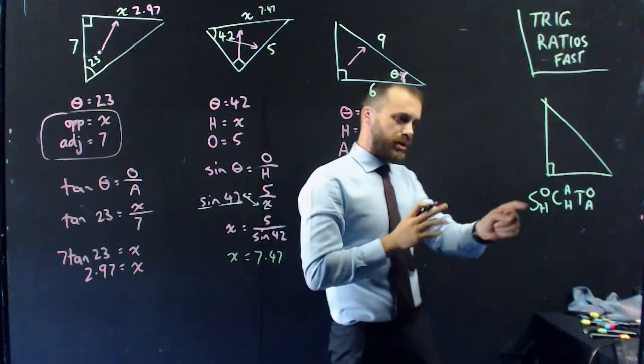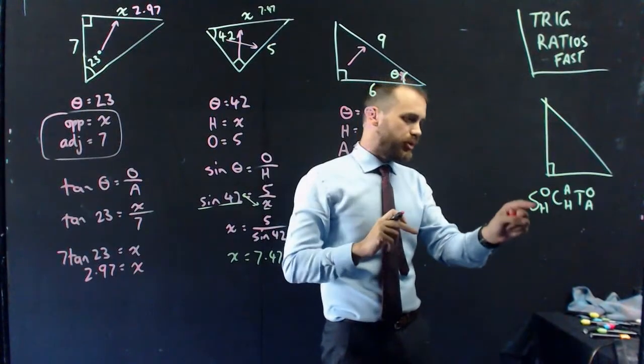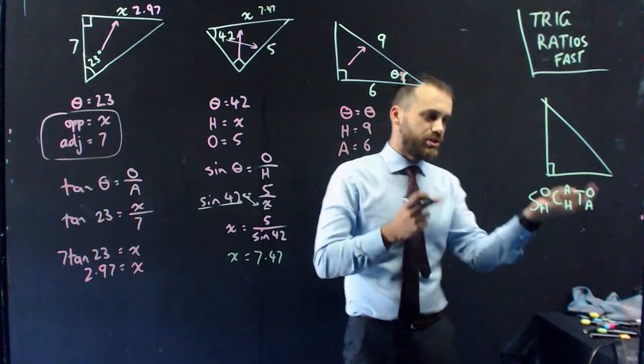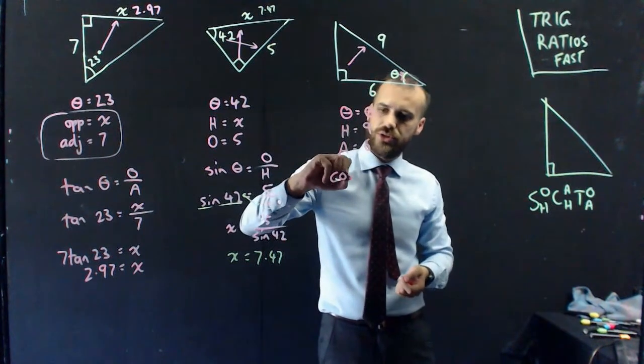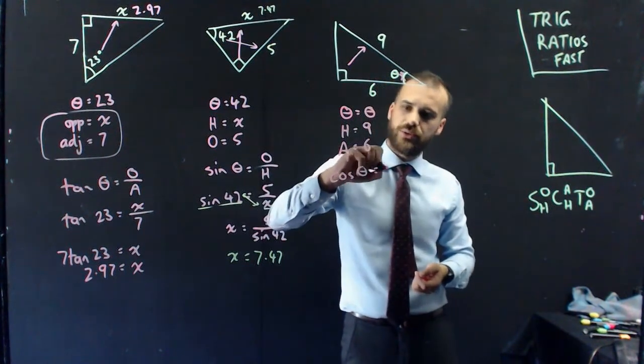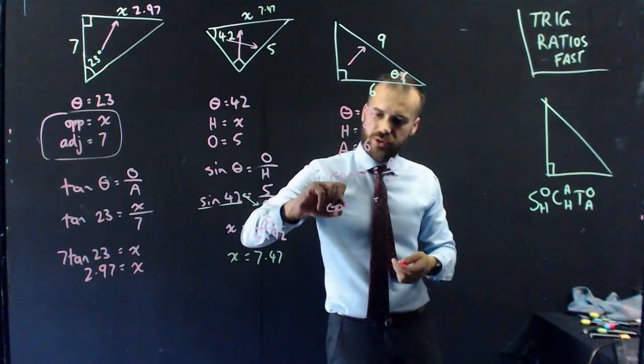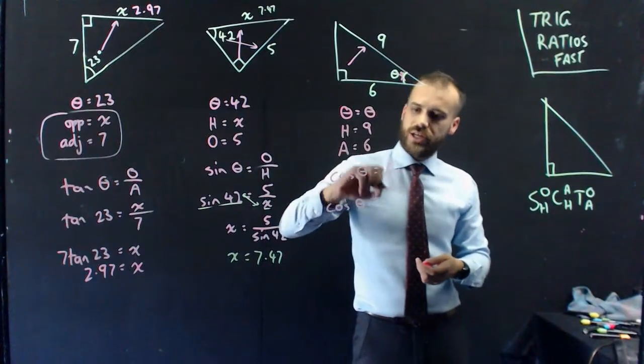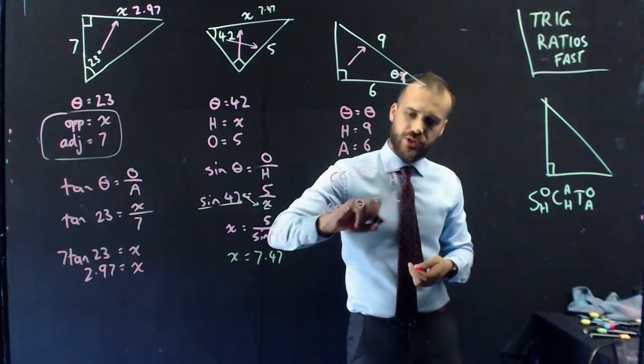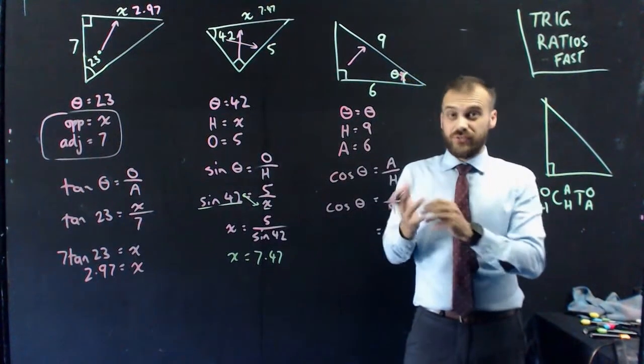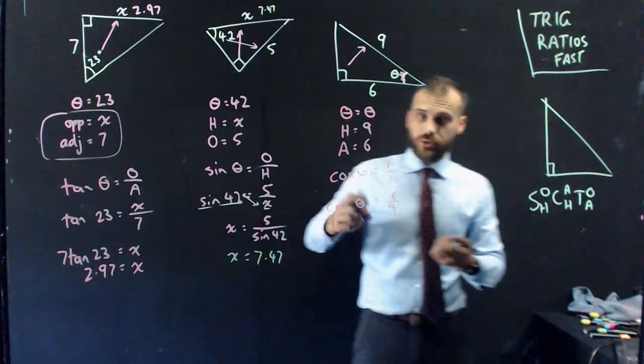Look at our ratios. A and H is what I'm looking for. O and H, no. A and H. Yep, it's a cosine question. Cosine theta equals adjacent over hypotenuse. Put in my values. I don't know what theta is. Adjacent is 6. Hypotenuse is 9. Now I need to use inverse cos or cos to the negative 1 or shift cos. I don't care what you call it.